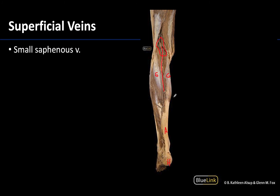To review: when thinking about the great saphenous vein, think medial for the entire lower limb. For the small saphenous vein, think posterior leg. If you have those two things down, then you know your superficial veins of the lower limb. Excellent — pretty straightforward. Thank you for your time and attention, and always feel free to reach out with any questions.